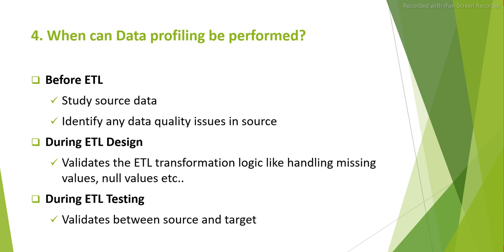The second stage is during ETL design — validate the ETL transformation logic. This is mostly done by developers through unit testing while designing the ETL jobs. The third stage is after loading, where testers and automation test engineers validate the source and target. This is done on top of your normal data validation testing.